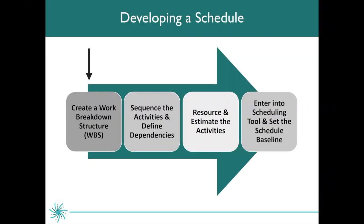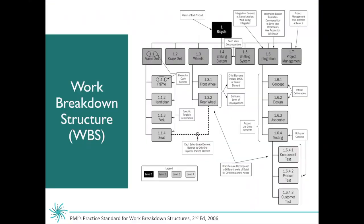First and foremost, when you are developing a project schedule, you want to create a work breakdown structure. I have a different video on going through the specific steps for this. However, I want to provide a quick overview of what a work breakdown structure looks like. Here is an example work breakdown structure from the Project Management Institute. This very top level is called level one and this is where your project name goes — in this case, building a bicycle. This next level of work is called the level two work breakdown structure, and you want to have level two as the main component.